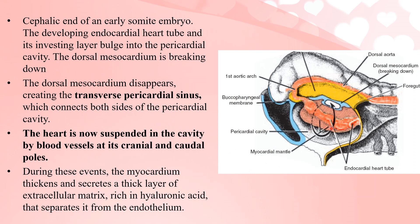Another diagram shows the fused heart tube with its cranial and caudal ends — the inflow part, the outflow part, the myocardium, and the pericardium and pericardial cavity. The dorsal mesocardium is visible; in its central part it disappears and forms a sinus called the transverse pericardial sinus. Because of this sinus, the whole endocardial cavity forms a single cavity and the heart is now suspended in the pericardial cavity at both ends via blood vessels.